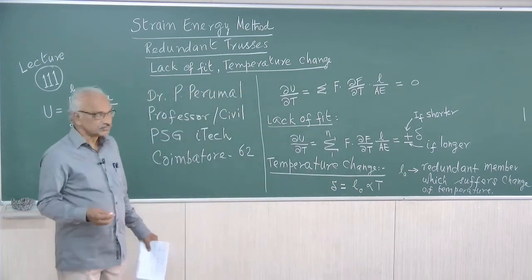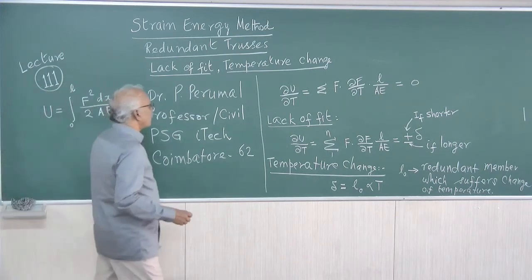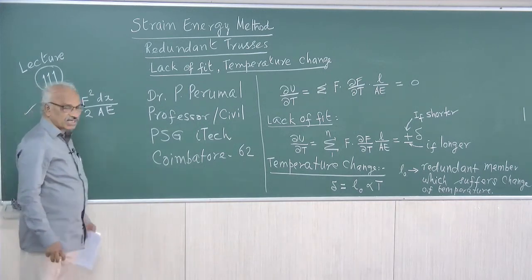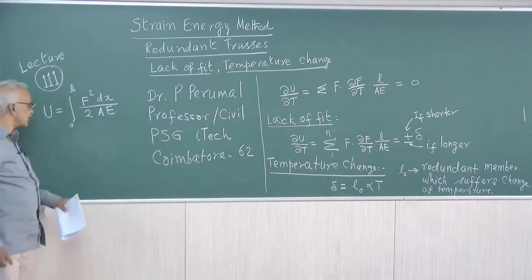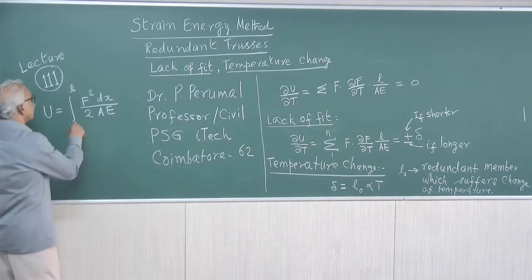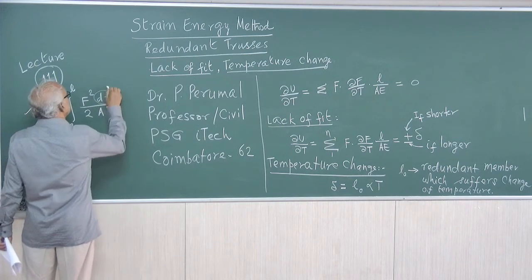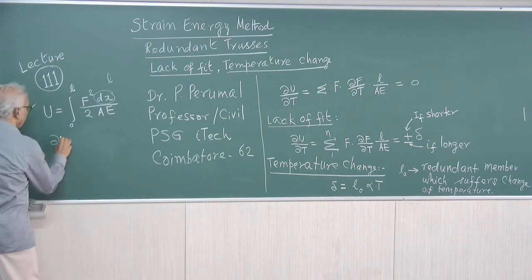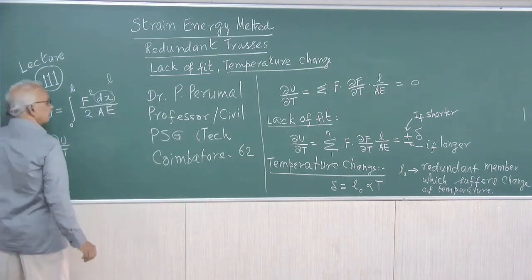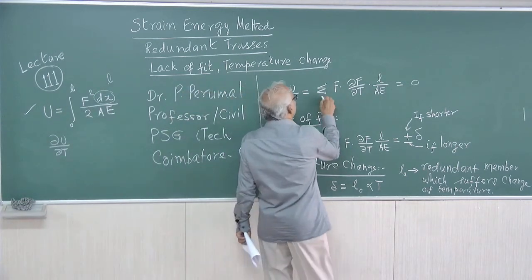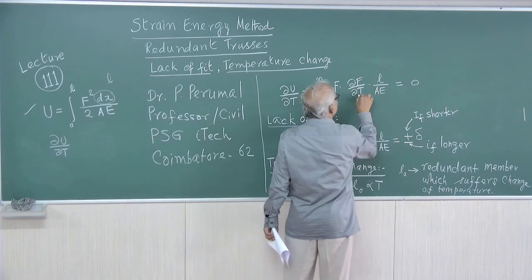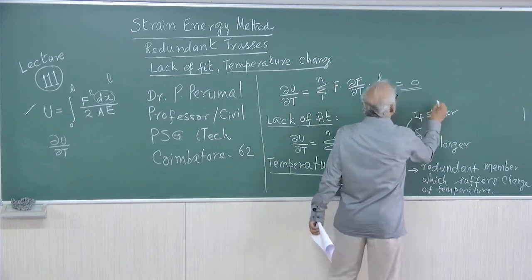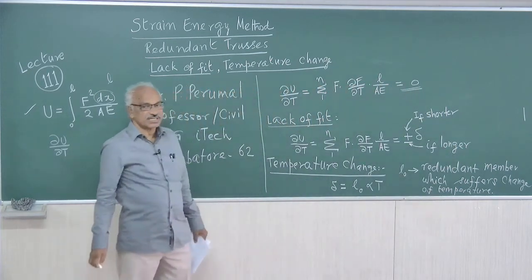Already we have discussed that the strain energy U equals the integral of f² dx / 2AE. From this, on integration, f² dx becomes f²L/AE, and ∂U/∂T becomes the sum from i=1 to n of f · (∂f/∂T) · L/AE, which is equal to 0 because the displacement along the redundant member is zero.